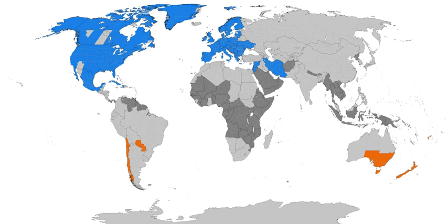A 2017 meta-analysis of 44 studies found that DST leads to electricity savings of only 0.34% during the days when DST applies. The meta-analysis furthermore found that electricity savings are larger for countries farther away from the equator, while subtropical regions consume more electricity because of DST. This means that DST may conserve electricity in some countries such as Canada and the United Kingdom, but be wasteful in others such as Mexico, the southern United States, and northern Africa. The savings in electricity may also be offset by extra use of other types of energy such as heating fuel.